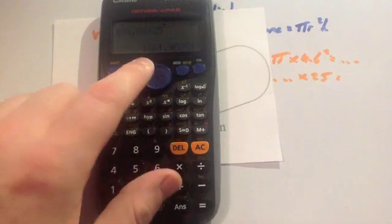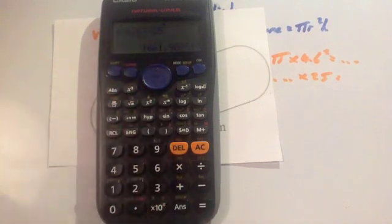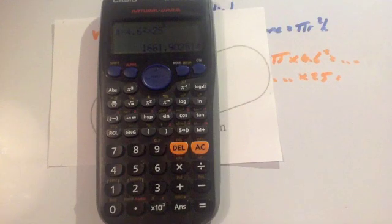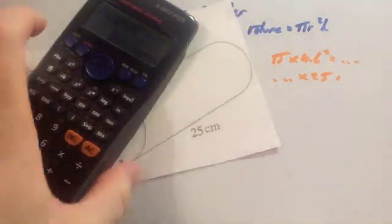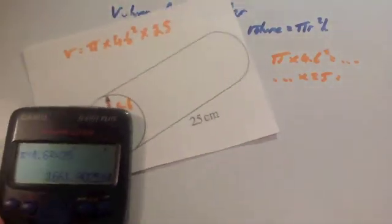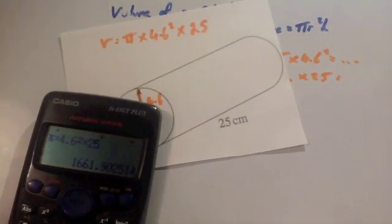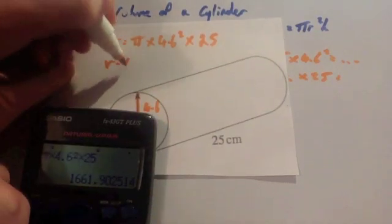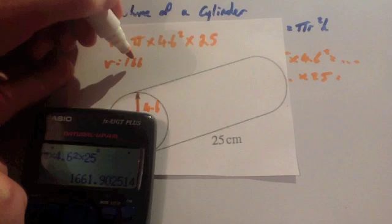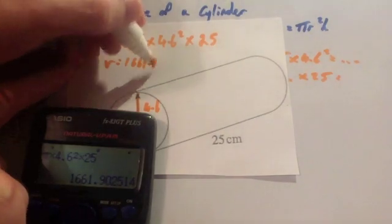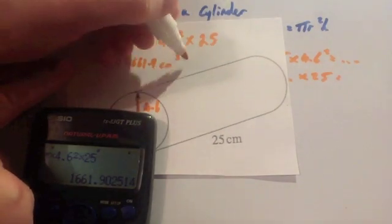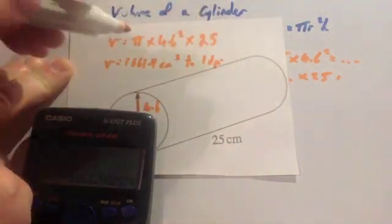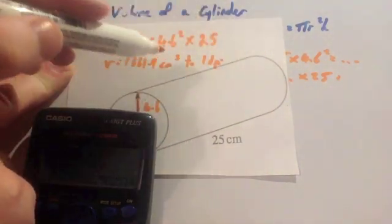So the volume of the shape equals 1,661.902514 centimeters cubed, okay? I'm just going to round that to one decimal place. So to one decimal place, it's going to be the volume equals 1,661.9 centimeters cubed to one decimal place. Notice it's centimeters cubed because it's volume.